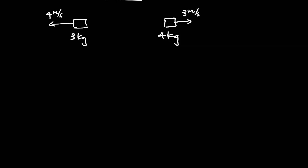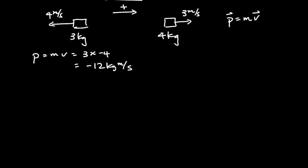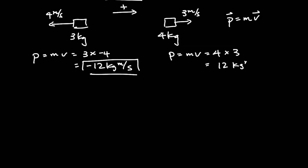But how do we account for the direction? Because momentum is a vector, and velocity is a vector. We can indicate the direction by either saying right or left, east or west, or we can indicate it by the positive or negative direction. So the one on the left: momentum is mass times velocity, which is 3 times negative 4, giving a momentum of negative 12 kg meters per second. The one on the right has a momentum of 4 times positive 3, which is 12 kg meters per second. The negative is just telling us the direction that the object is moving.